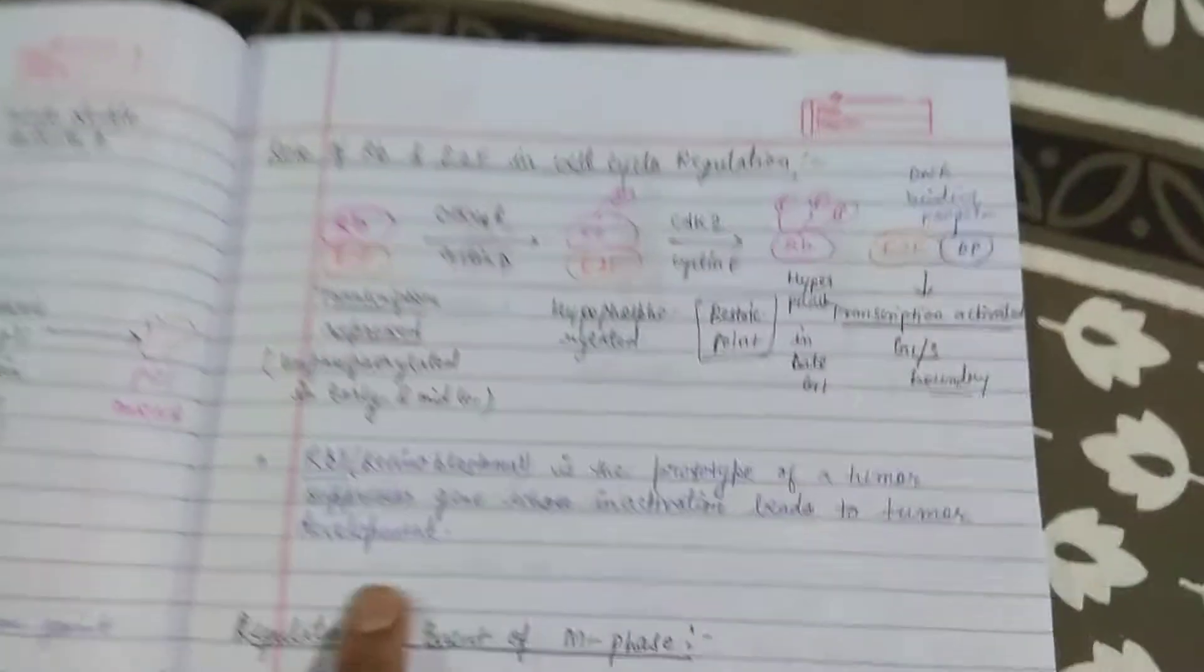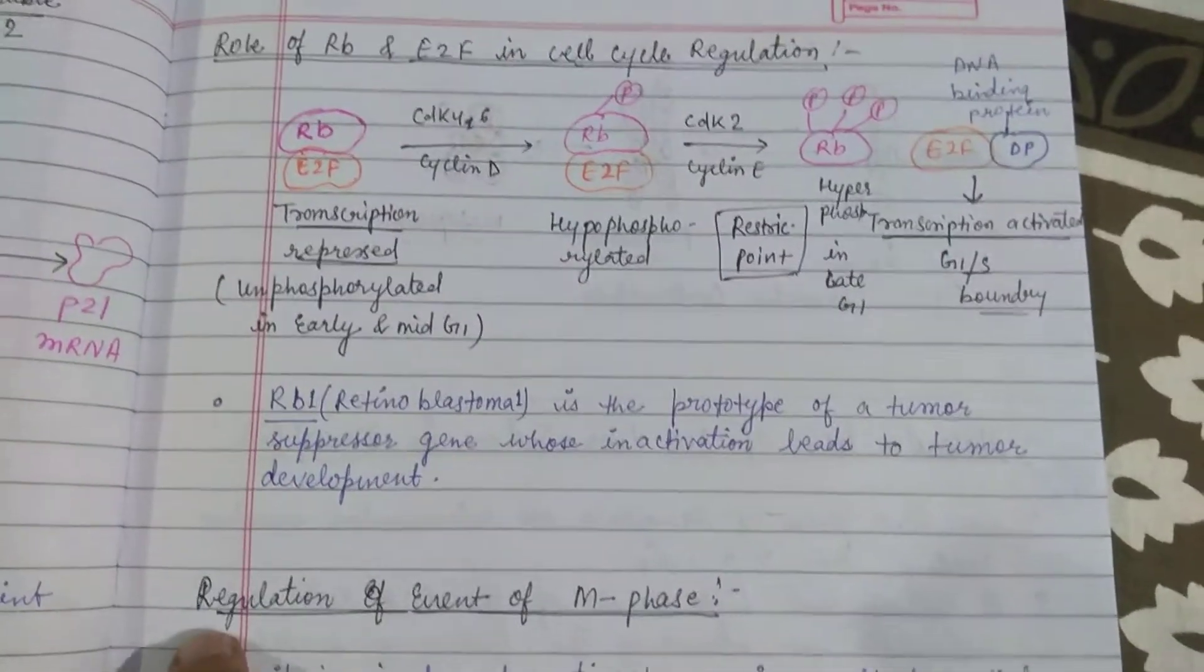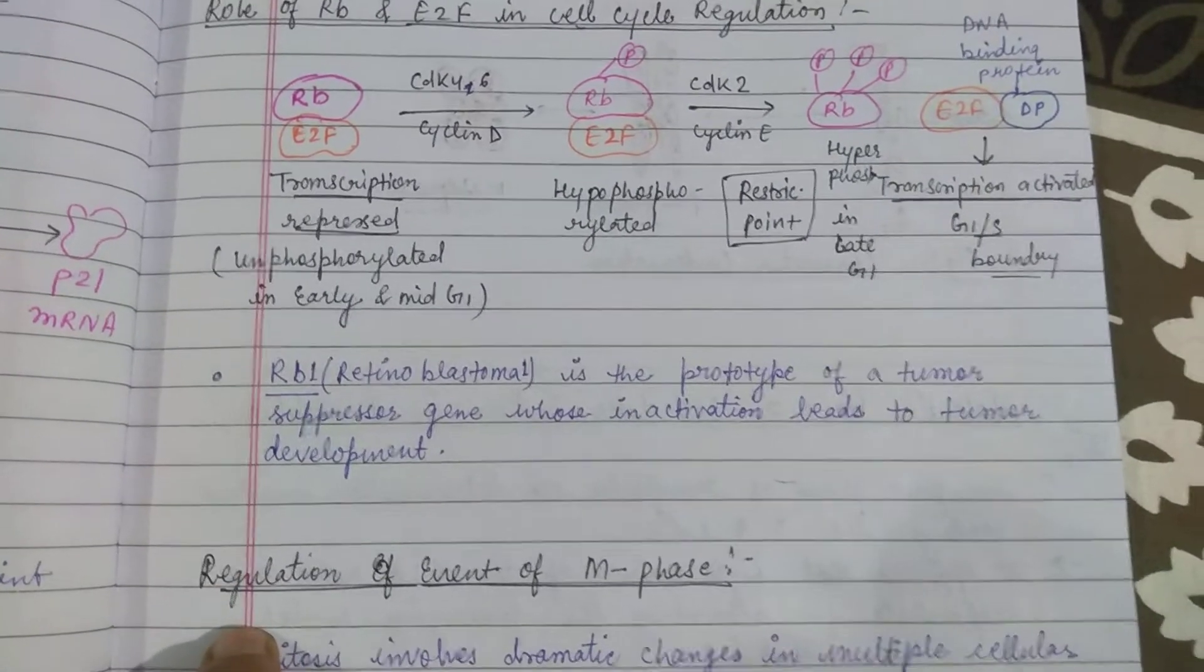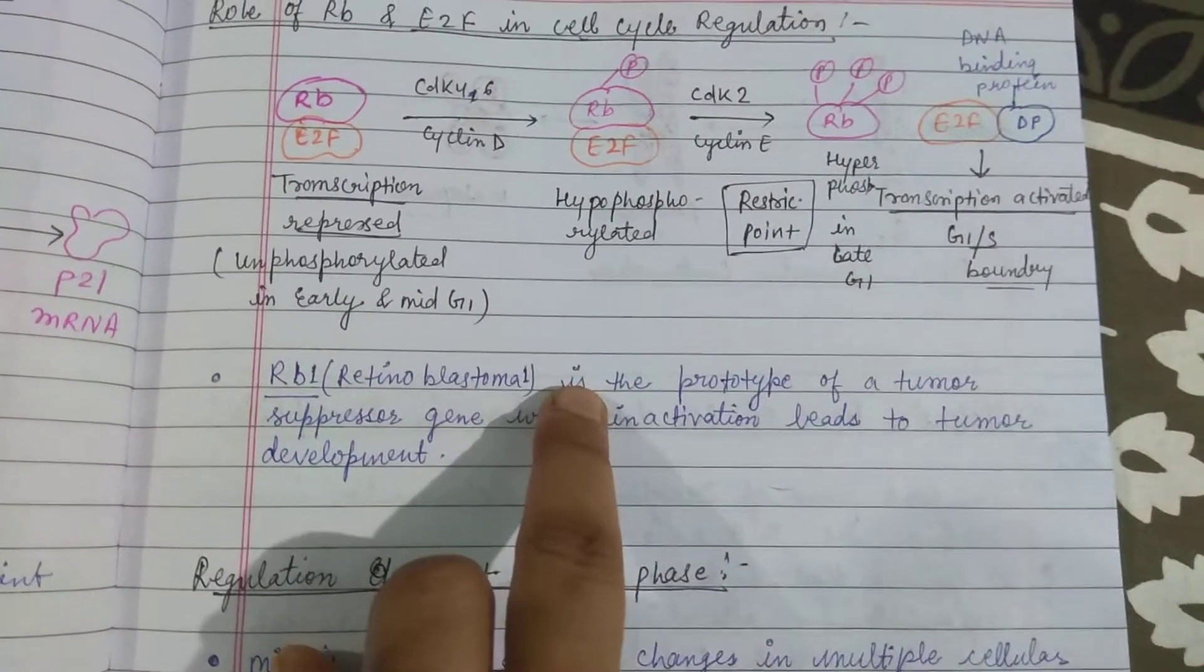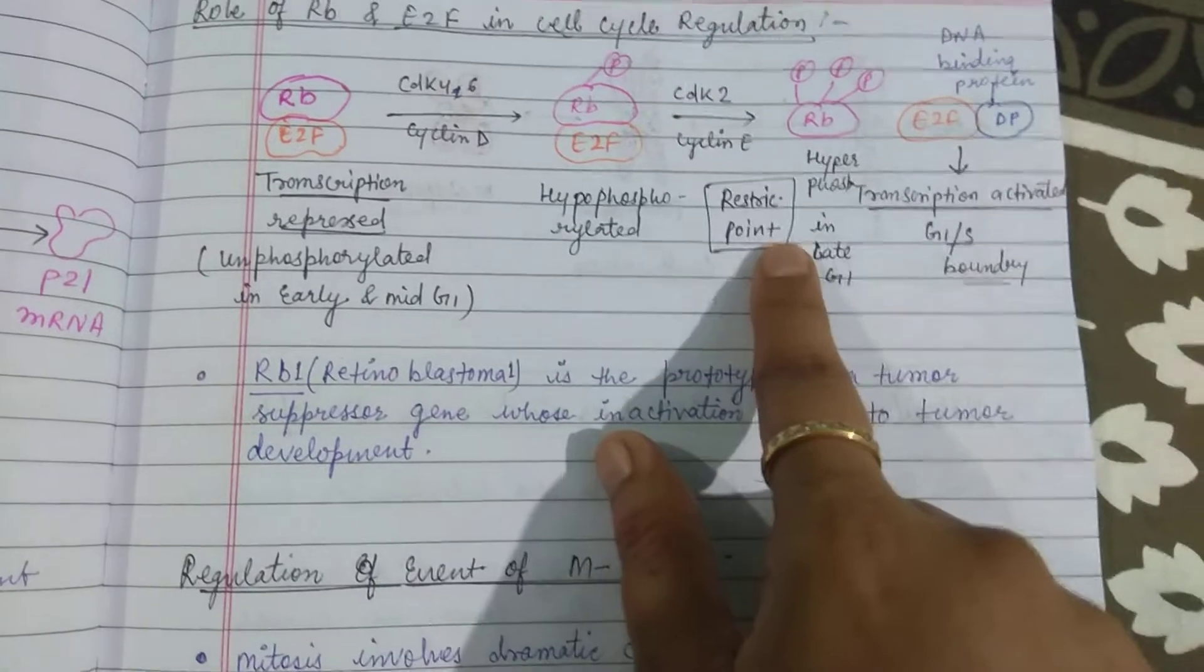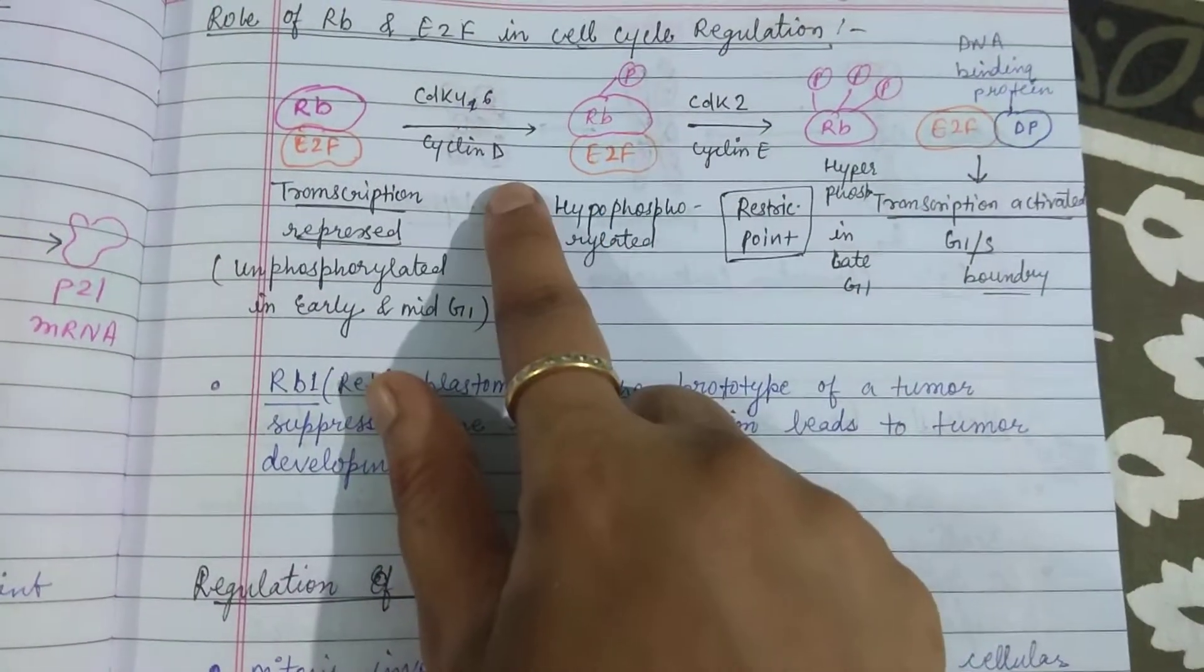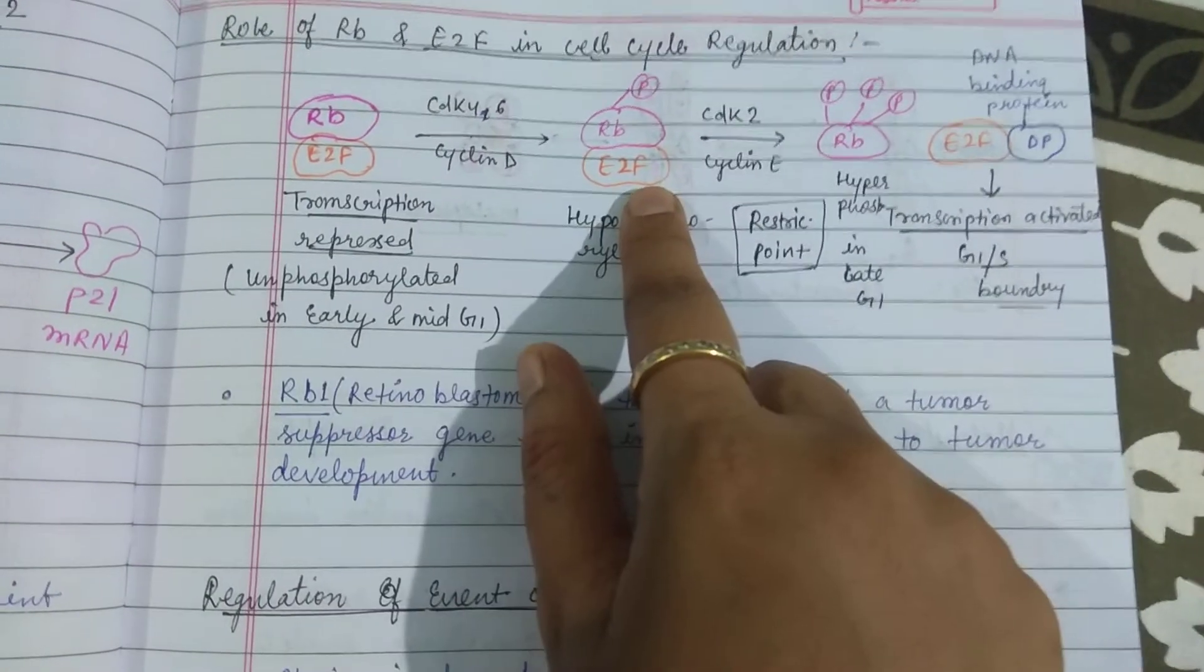Then the role of RB and E2F. We see RB and E2F, they are both unphosphorylated. They are talking about early and mid G1. Then there is a restriction point, so when cyclin CDK4 and 6 and cyclin E2F, then we see it gets phosphorylated.